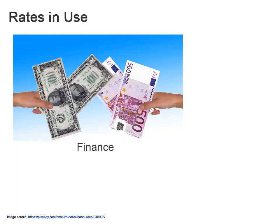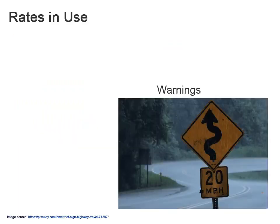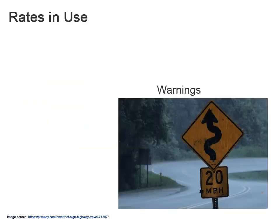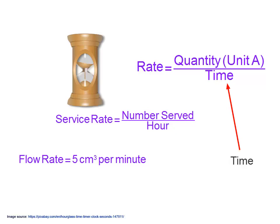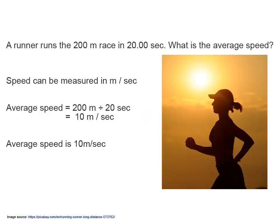Here are some typical examples of how rates are used. Rates often involve some element of time. Flow rates, service rates and speed are all time-based rates. For example, a common question about speed may be: what is the average speed of a race?